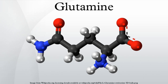Dietary sources of L-glutamine include beef, chicken, fish, eggs, milk, dairy products, wheat, cabbage, beets, beans, spinach, and parsley. Small amounts of free L-glutamine are also found in vegetable juices.